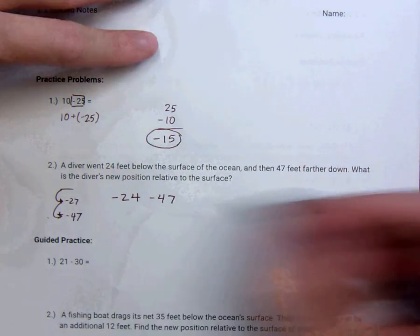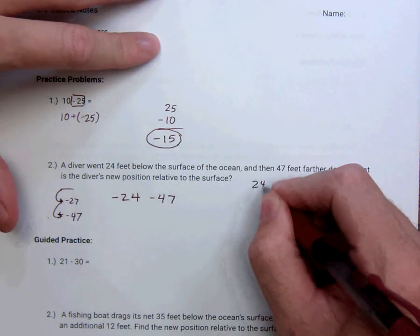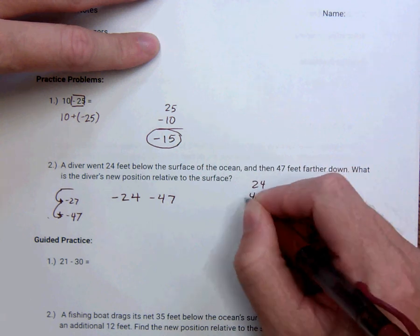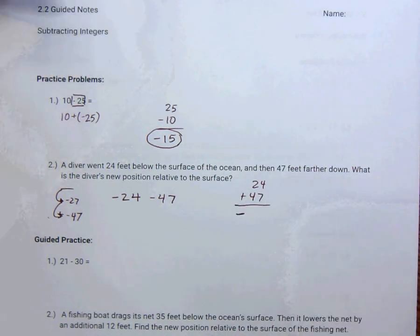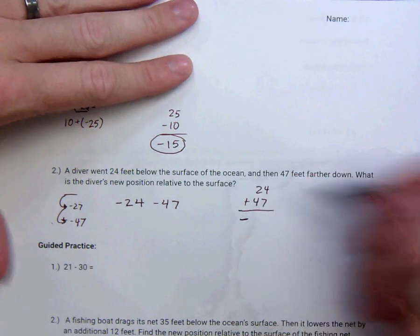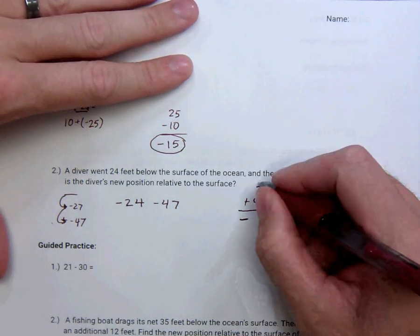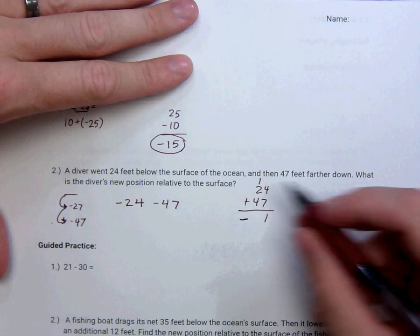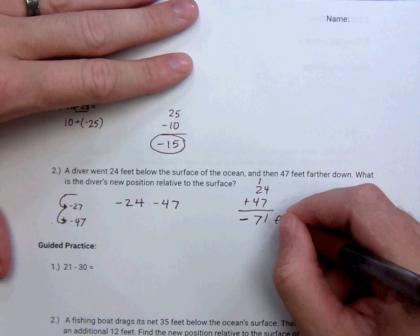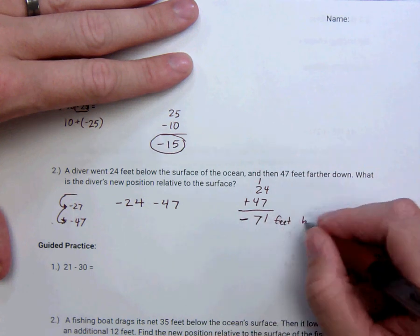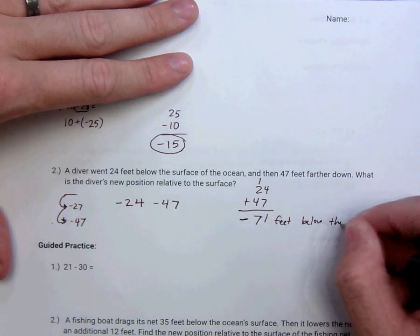So really since both of these are negative, what's kind of nice is we can just add them together like normal. And then our final answer is going to be a negative. So seven plus four, that's 11. Carry one, three, seven, 71. So she's negative 71 feet below the surface.